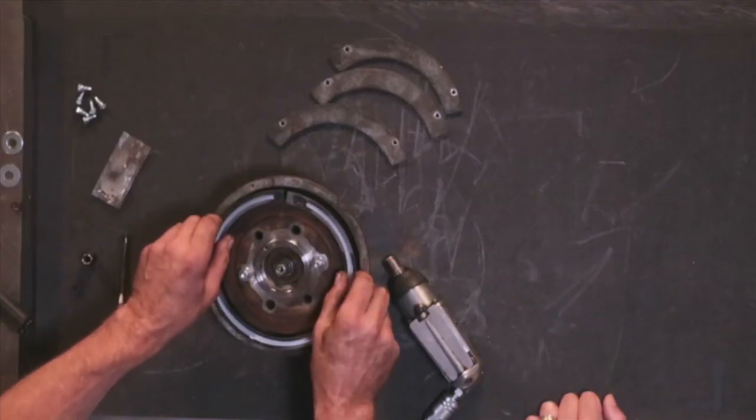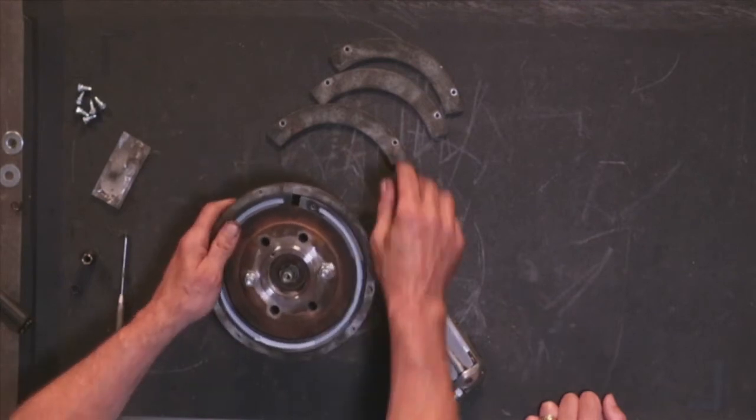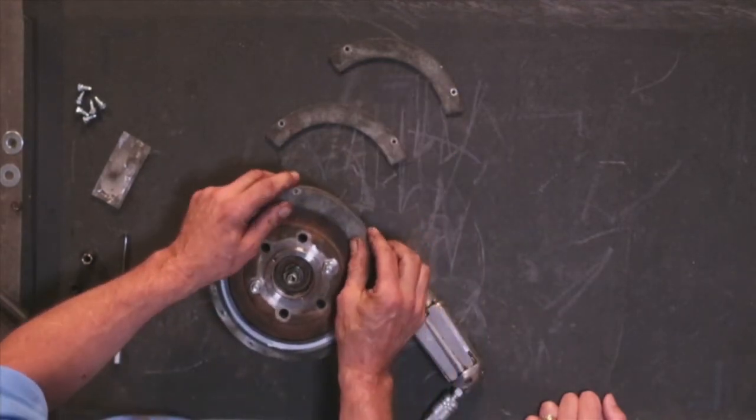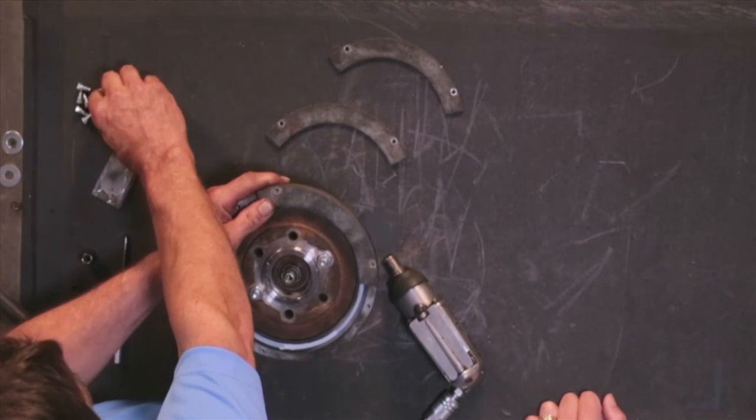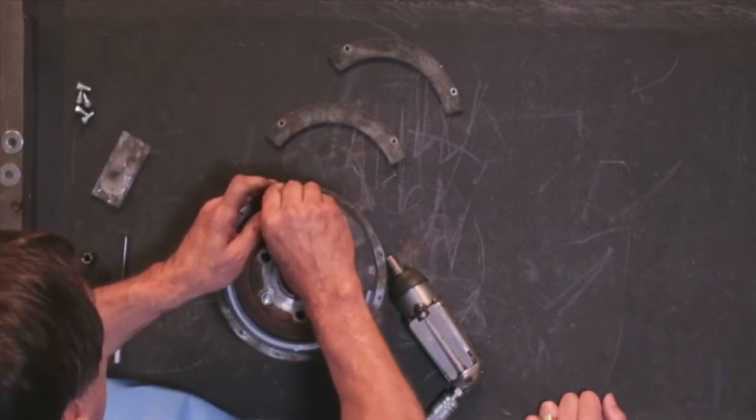Turn the fan clutch over and install the new friction material. Simply place the friction in the clutch and then install the retaining plates by installing the six retaining plate screws. Using a torque wrench, tighten these six screws to 30 inch-pounds.